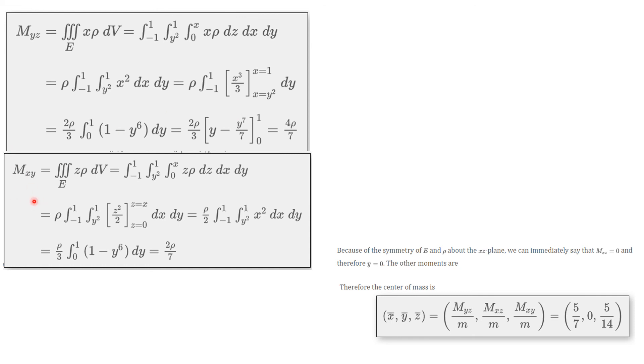And similarly, this integral is going to be the triple integral over e. This is the definition of that integral. And this is my calculation. And it goes much as before. And I get 2 rho over 7. Now I'm going to have to take each of these and divide it by m. And so that's the calculation that I do to get my coordinates of the center of mass.